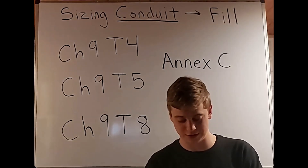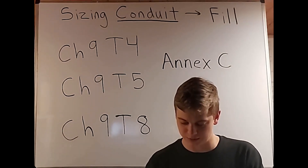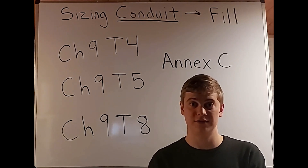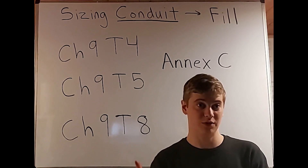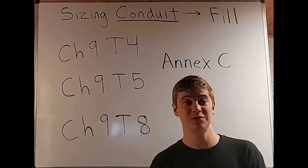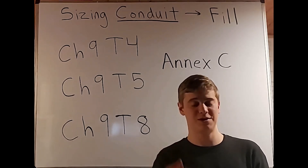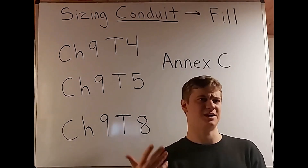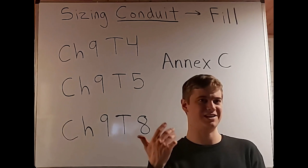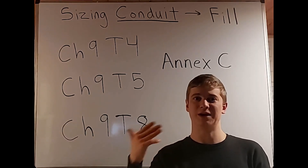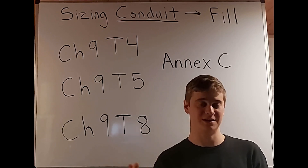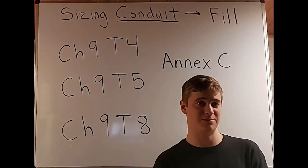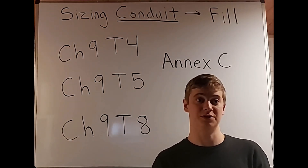The next really important note is number 8: where bare conductors are permitted by other sections of this code, the dimensions for bare conductors in Table 8 shall be permitted. So when you have a question talking about bare conductors, you're able to use Chapter 9, Table 8 to figure out your dimensions — whether that's circular mills or square inches. You'll get a question mentioning a bare conductor for conduit fill, and you'll need to know its size. That's where Chapter 9, Table 8 comes in — often you'll be using square inches, but it's also the table for circular mills.